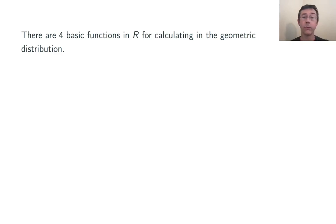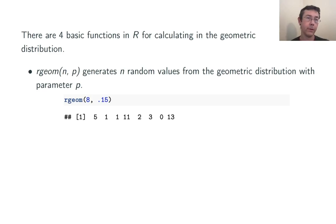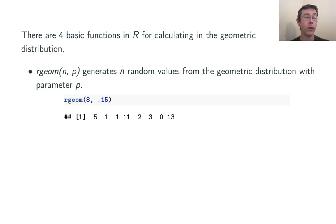There are four basic functions in R for calculating in the geometric distribution. First, rgeom gives you simulations from a geometric distribution with parameter p. For instance, rgeom is going to generate eight random values from this distribution. The first time we tried this out, we had five failures before the first success when the probability of success on an individual trial was 0.15. In the second trial, we had one failure before the first success, and so on.